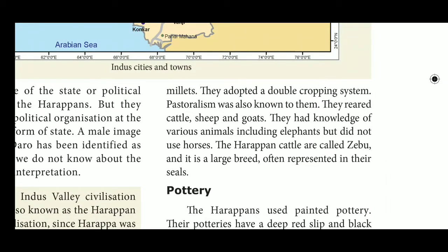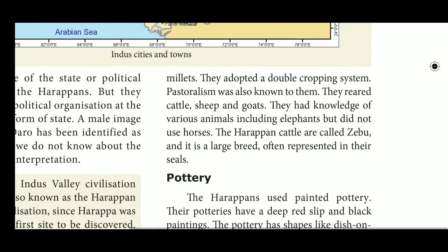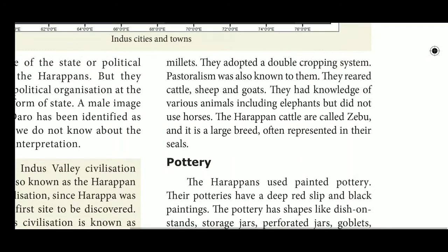The Harappan people knew about other animals but did not know about the horse. The Harappan cattle are called zebu — a large animal often represented in their seals, resembling a bull.